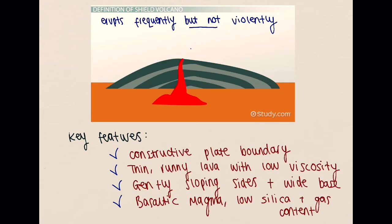A shield volcano tends to form on a constructive plate boundary. If you're not sure what that is, there's a video on my channel with a link in the description. Now on constructive plate boundaries, we tend to get thin, runny lava with a low viscosity. Viscosity is a word used to describe how thick and stodgy a liquid is, so a low viscosity means it's very thin and very runny.